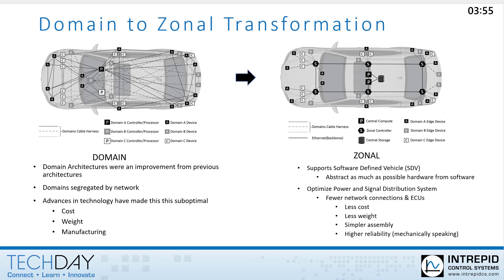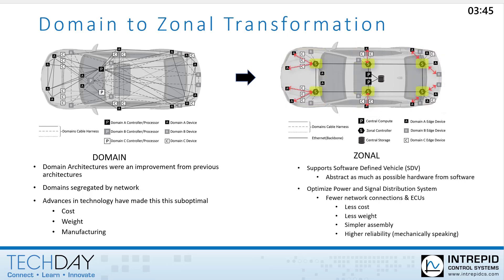New zonal architectures seek to improve the situation by networking ECUs, actuators, and sensors together, not based on their function, but rather based on their location — hence the name zonal. Zonal controllers are distributed in the vehicle and aggregate the data to and from the edge devices that are physically nearby. The aggregated input and output data then is sent to and from a sort of superbrain within the vehicle called the central compute module.